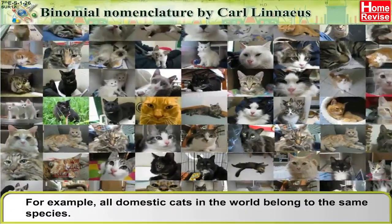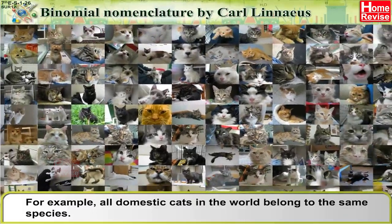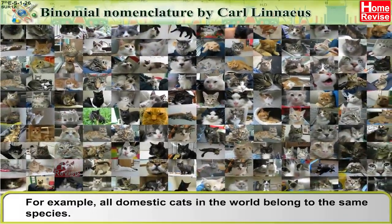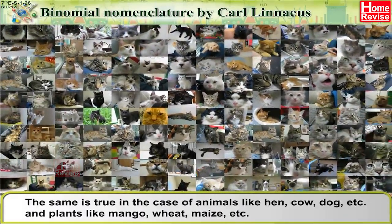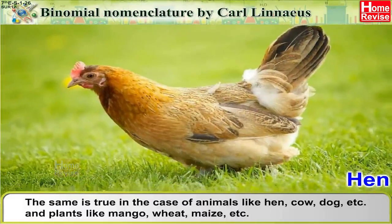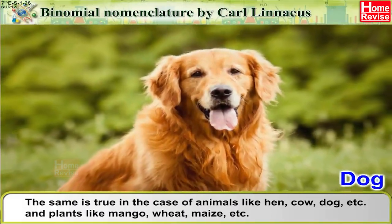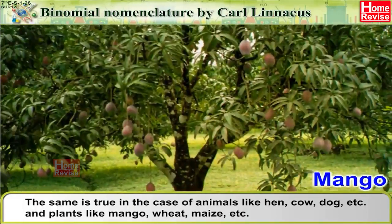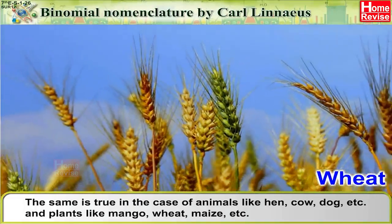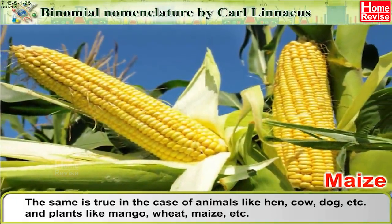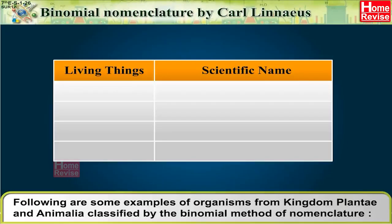All organisms of a species are so similar that irrespective of differences in colour, height, habitats, and habits, they can reproduce among themselves and form new individuals like themselves. For example, all domestic cats in the world belong to the same species. The same is true for animals like hen, cow, dog, and plants like mango, wheat, and maize.